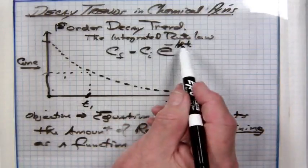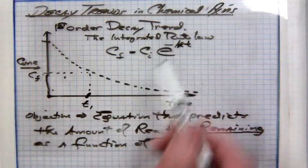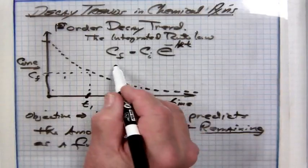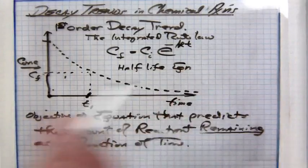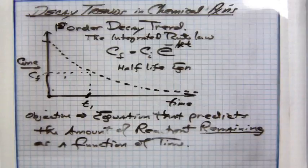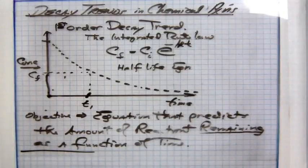This equation predicts C-final as a function of time. One other equation that goes into this is the half-life equation. Half-life in a first order decay trend is constant. When we talk about the concept of half-life, that is a calculation of the time needed for one-half of the original amount or concentration.